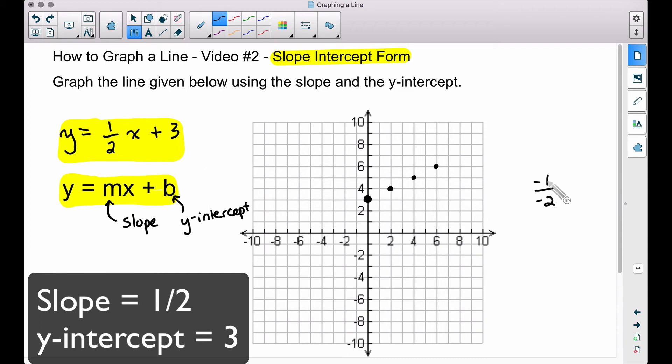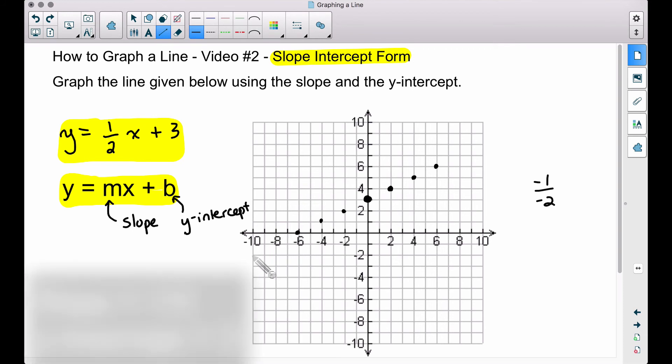For example, I'll come back to my y-intercept. Instead of going up and to the right, I'll go down one and to the left two, and we can continue this pattern on as well. Once you have a few dots up there, go ahead and graph your line. Stick your arrowheads on the end.